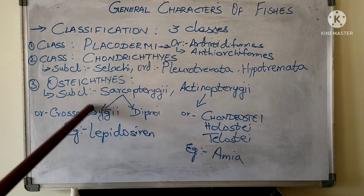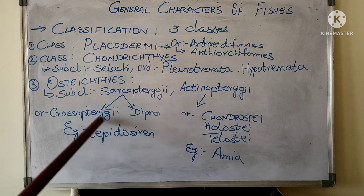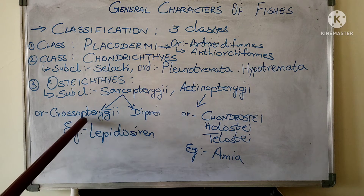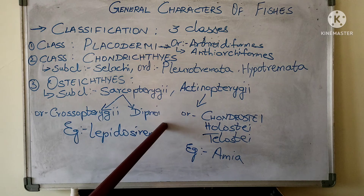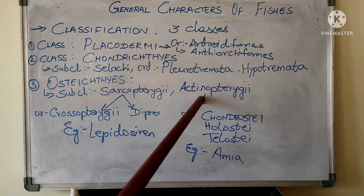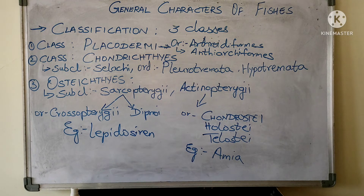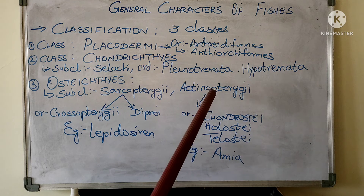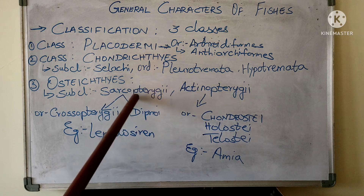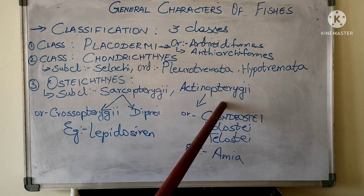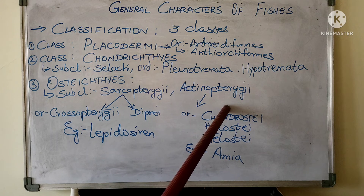The other subclass is Actinopterygii. In Actinopterygii, internal nostrils are absent. Only one dorsal fin is present and the squamosal bone is absent. This subclass is further divided into three orders: Chondrostei, Holostei, and Teleostei.